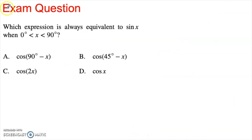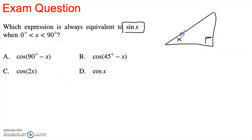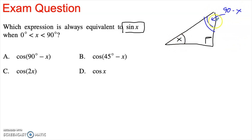Another way you'll see this idea come up: which expression is always equivalent to sine of x when x is between 0 and 90? By saying x is between 0 and 90, they're telling us x will fit inside a right triangle — there's room for a right angle, x, and some other angle that is the complement of x, which is 90 minus x. So the sine of x — this side over the hypotenuse — is definitely equal to the cosine of 90 minus x.